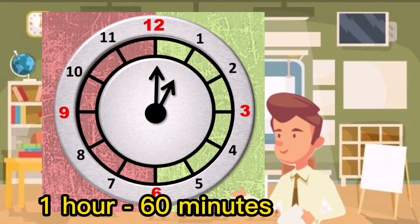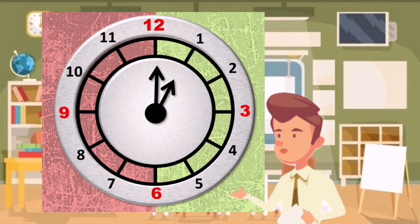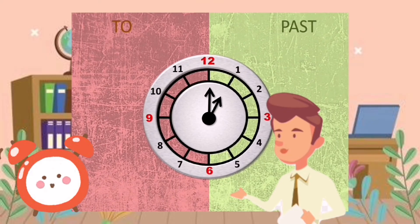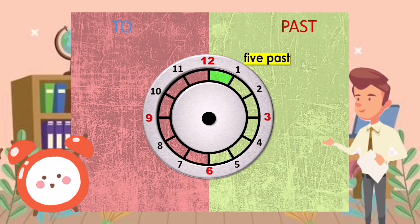Now let's learn our chart to understand more about telling time. If the long hand points to each number, it tells us: at number one, five past.